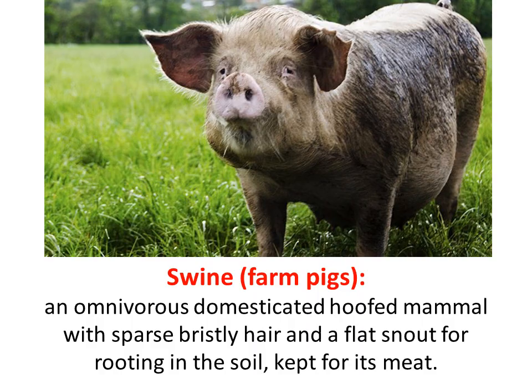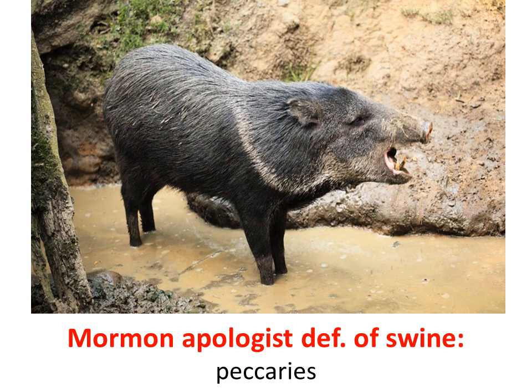Another animal Joseph Smith would be intimately aware of since they lived on farms is swine — an omnivorous domesticated hoofed mammal with sparse bristly hair and a flat snout for rooting in the soil, kept for its meat. But since there were no domesticated farm pigs in Book of Mormon times, the apologists have defined 'swine' as a peccary. Here is a picture of it — it's got big nasty teeth and looks kind of like a pig.